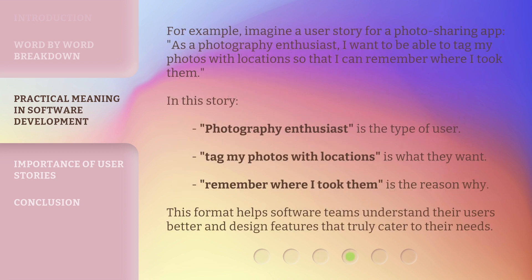For example, imagine a user story for a photo sharing app: 'As a photography enthusiast, I want to be able to tag my photos with locations so that I can remember where I took them.' In this story, photography enthusiast is the type of user, tag my photos with locations is what they want, and remember where I took them is the reason why. This format helps software teams understand their users better and design features that truly cater to their needs.